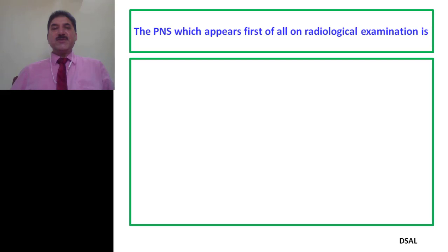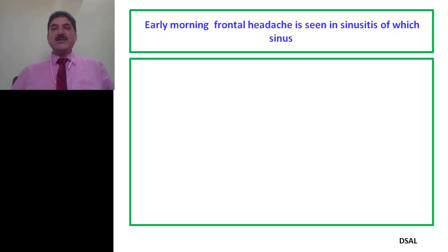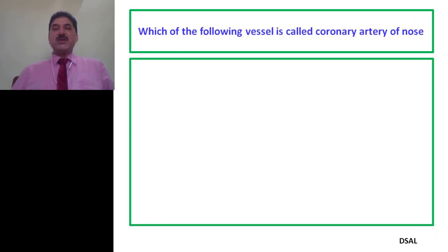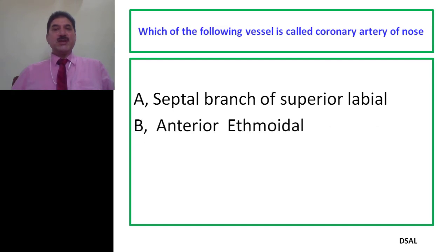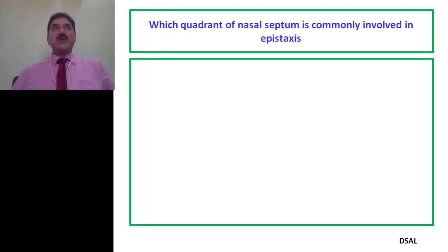The paranasal sinus which appears first on radiological examination: A. Sphenoidal, B. Ethmoidal, C. Maxillary, D. Frontal. The correct option is maxillary — the maxillary sinus appears first on radiological examination. Early morning frontal headache is seen in sinusitis of which sinus? A. Maxillary, B. Frontal, C. Ethmoidal, D. Sphenoidal. The correct answer is frontal. Which of the following vessel is called the coronary artery of the nose? A. Septal branch of the superior labial, B. Anterior ethmoidal artery, C. Posterior ethmoidal artery, D. Greater palatine artery. The correct option is A — the septal branch of the superior labial artery is called the coronary artery of the nose.